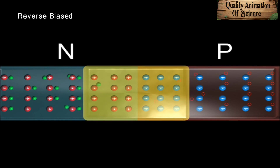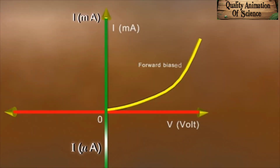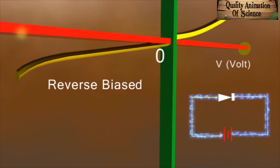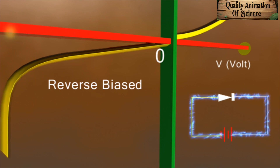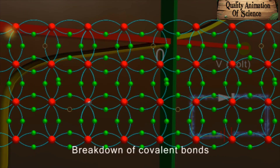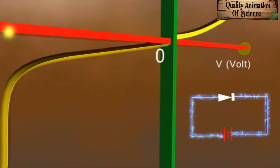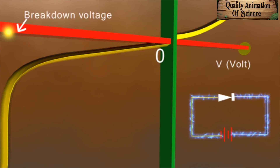The graph shows IV characteristics of the P-N junction under the forward bias condition. If the voltage applied in the reverse biased condition is gradually increased, the current also starts increasing till the voltage approaches a particular value. Thereafter, even for a slight increase in the voltage value, the current starts increasing rapidly. The reason behind this is the breakdown of covalent bonds on a large scale, generating a large number of electron-hole pairs. The voltage at which this effect starts is called the breakdown voltage.